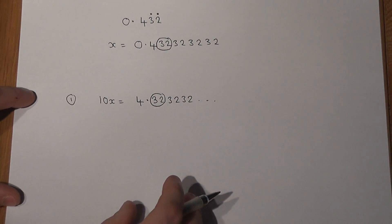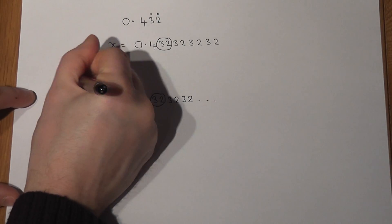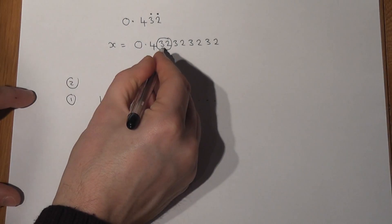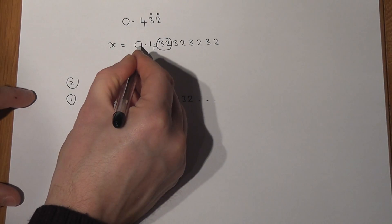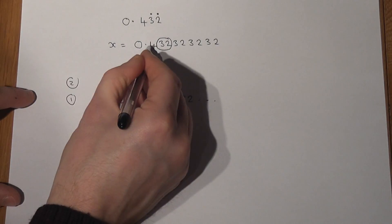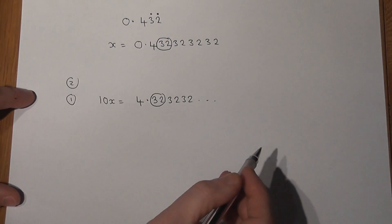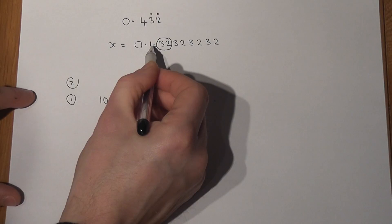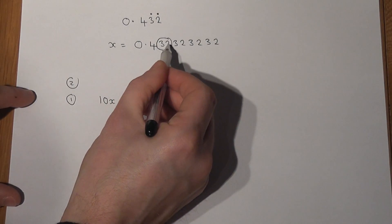Then my second step was to times by enough tens to get the entire circle bit beyond the point. So I've got to shift 1, 2, 3 numbers to the left of the point. So it's not 10X, it's not 100X, it's actually 1000X.